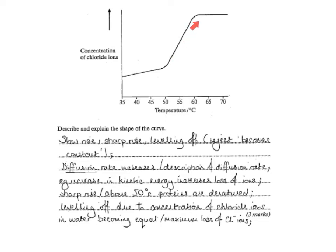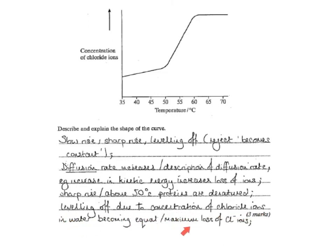This steep rise can't be due to kinetic energy — otherwise it would continue to increase at the same gradient. This is due to, after 50 degrees, the proteins becoming denatured. The channel proteins and carrier proteins have become denatured; they now allow any molecule to pass through them and are no longer selective. The reason this levels off is different this time: it levels off because the concentration of chloride ions inside and outside of the cell have become the same — they've reached equilibrium. There is no longer a diffusion gradient across the cell surface membrane.